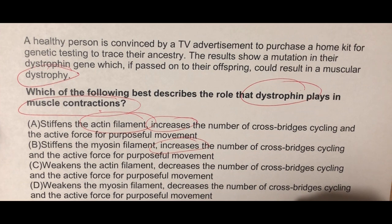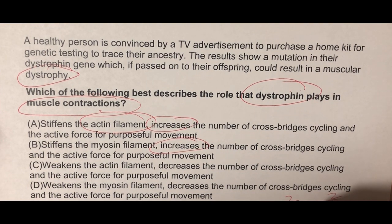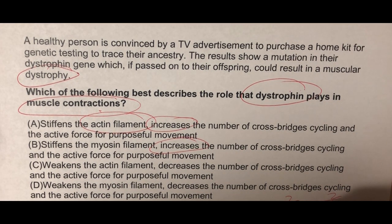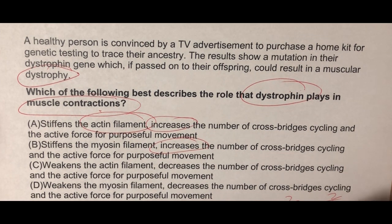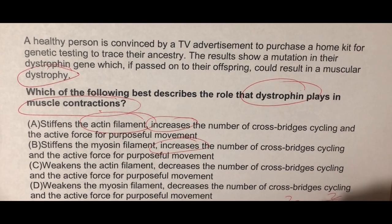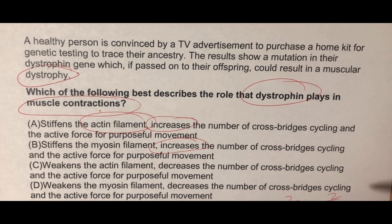If we look at a sarcomere, it looks something like this. We have Z lines, and the actin filaments — the thin filaments — are attached to the Z lines. The thick filaments are the myosin filaments, and it's the overlapping of the actin and myosin filaments that produces crossbridges. This allows actin and myosin to interact, create crossbridges, and bring those Z lines closer together — producing a contraction. So if dystrophin, which I'll call 'D' here, is associated with the actin filament and stiffens it, it could increase the number of crossbridges by optimizing the overlap between actin and myosin.